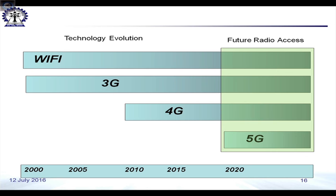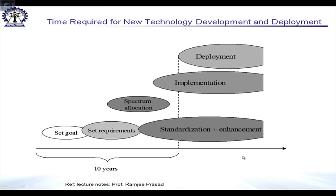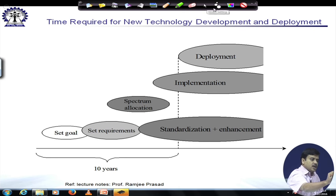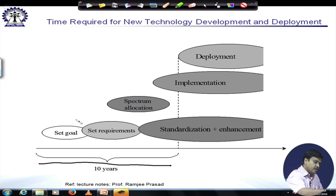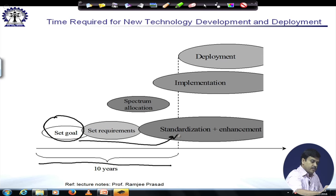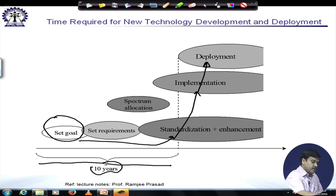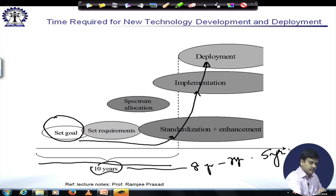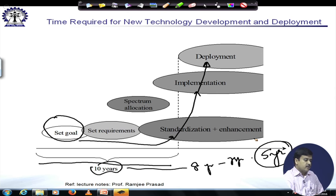Looking at the timeline of broadband technologies developed from 2000 to 2015, activities on 5G systems have started to grow. Typically there used to be a ten-year cycle from the time a goal was set to work on a particular technology to when standardization, implementation trials, and finally deployment would happen. However, today this ten-year period is getting reduced to eight or seven years, and sometimes people say five years, which is really short given the number of changes that are happening compared to earlier systems.